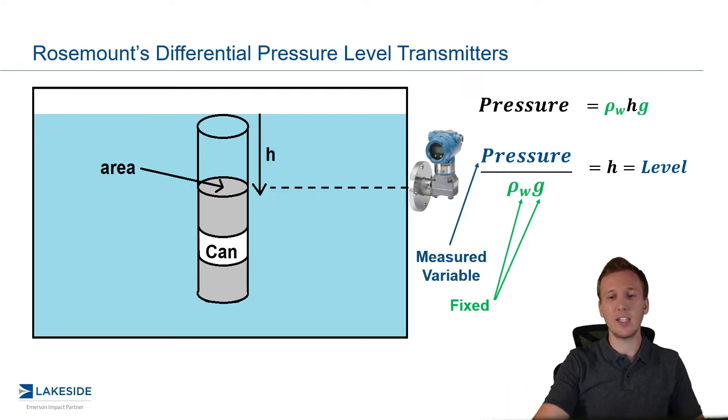Now pressure is what is called a measured variable. And then we divide it by some constant and we are left with what is called a scaled variable. It's important to understand this because if we are measuring something other than water, we have to scale for the changes in density.